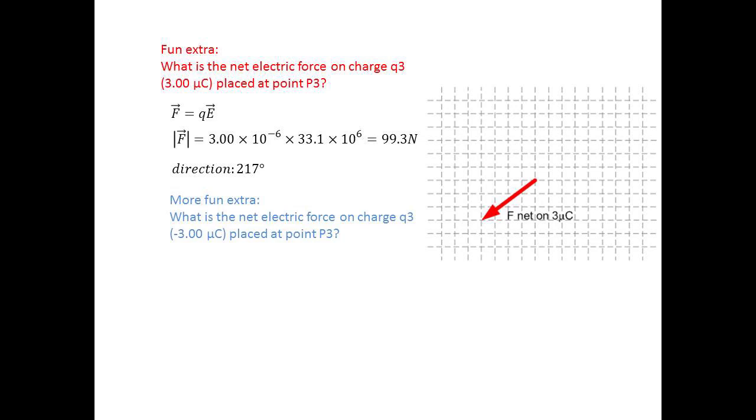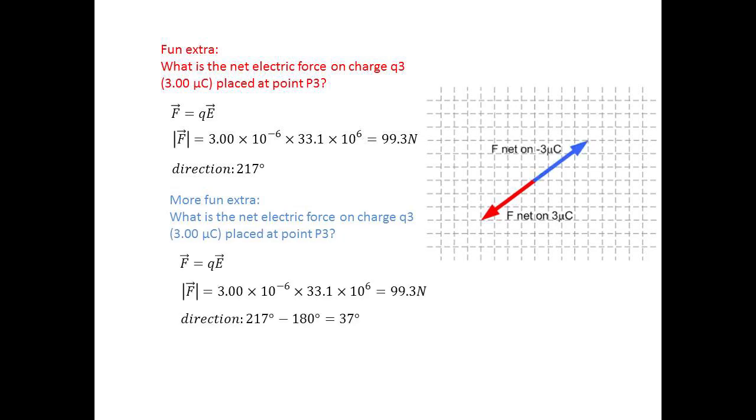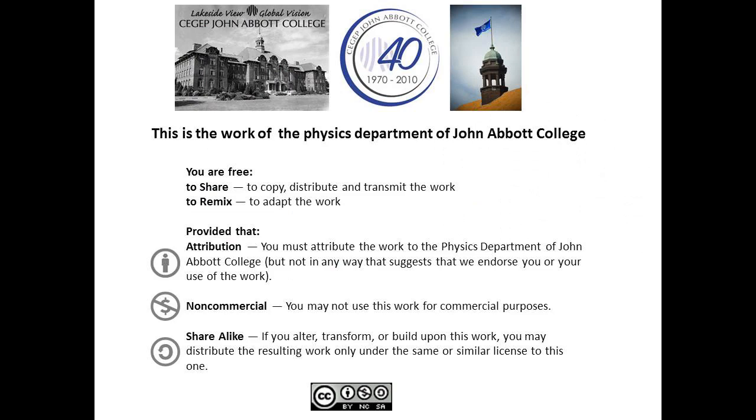Wait, what if it was negative 3 microcoulombs instead of 3 microcoulombs? Well, you would do exactly the same thing, except that the force on a negative charge is in the opposite direction compared to the force on a positive charge. So the force on a negative charge would be 99.3 newtons at 37 degrees. Well, I'm all out of fun extra questions now. So we're done. Spread the joy of physics!